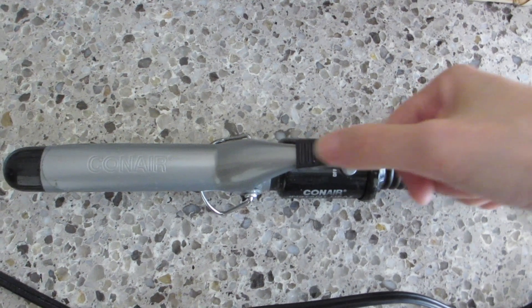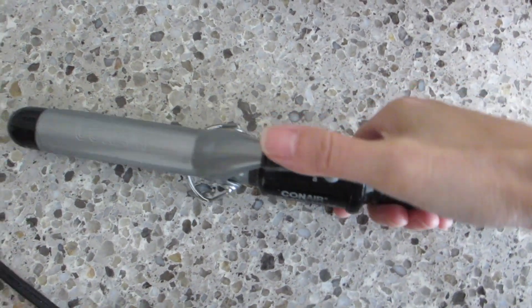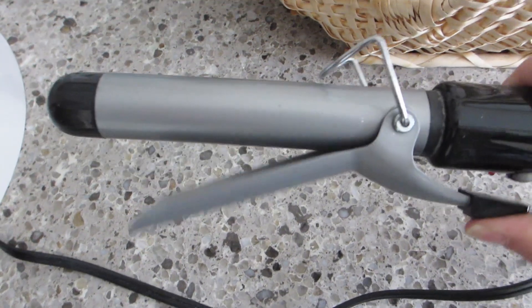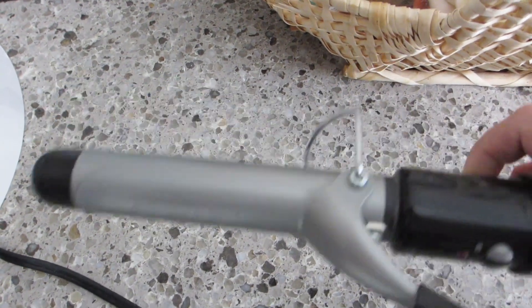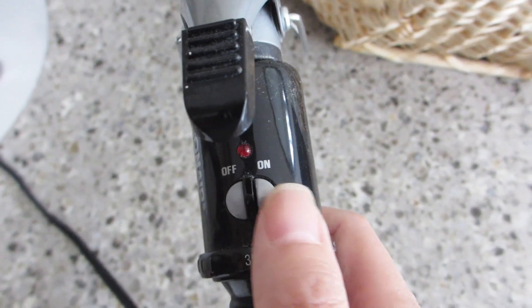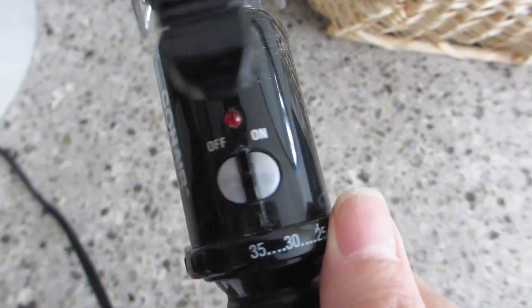First off, it has a kickstand so the hot curling iron never has to directly touch your countertop. Next, it has a great clamp mechanism that is very easy to maneuver with just your thumb. And then we have a clearly marked off and on button with a red light indicator so you always know if the curling iron is powered on or not.